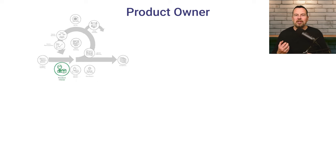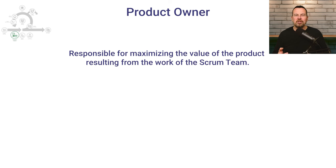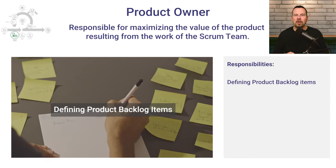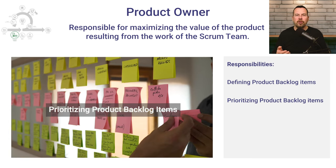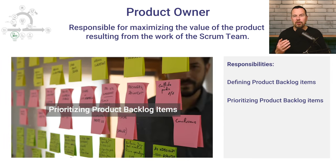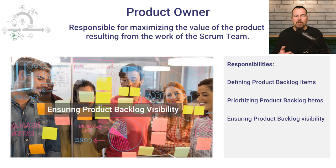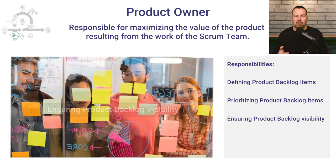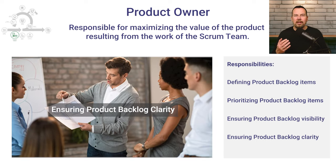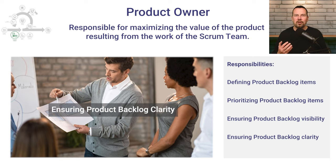The product owner is responsible for maximizing the value of the product resulting from the work of the Scrum team. The product owner accomplishes that by clearly defining product backlog items, ordering items in the product backlog by priority so that product goals are achieved as fast as possible, ensuring that the product backlog is visible and clear to all, and ensuring that the development team understands items in the product backlog.